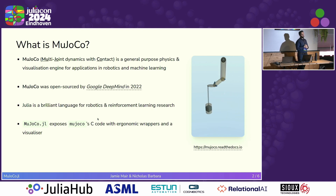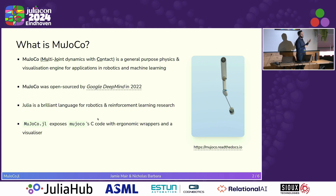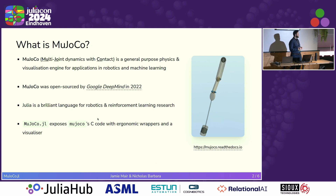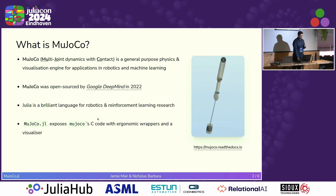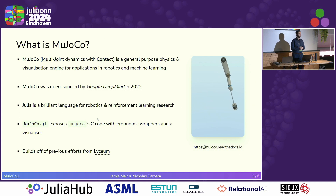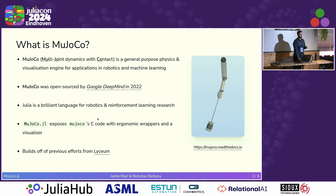What we do with MuJoCo.jl is build the MuJoCo C library and export the bindings into Julia, making it quite ergonomic to use. Nick also introduced a visualizer so you can develop your algorithm and see the results. We should acknowledge the group Lyceum, who did a lot of this work many years ago — our visualizer code is directly based on theirs.